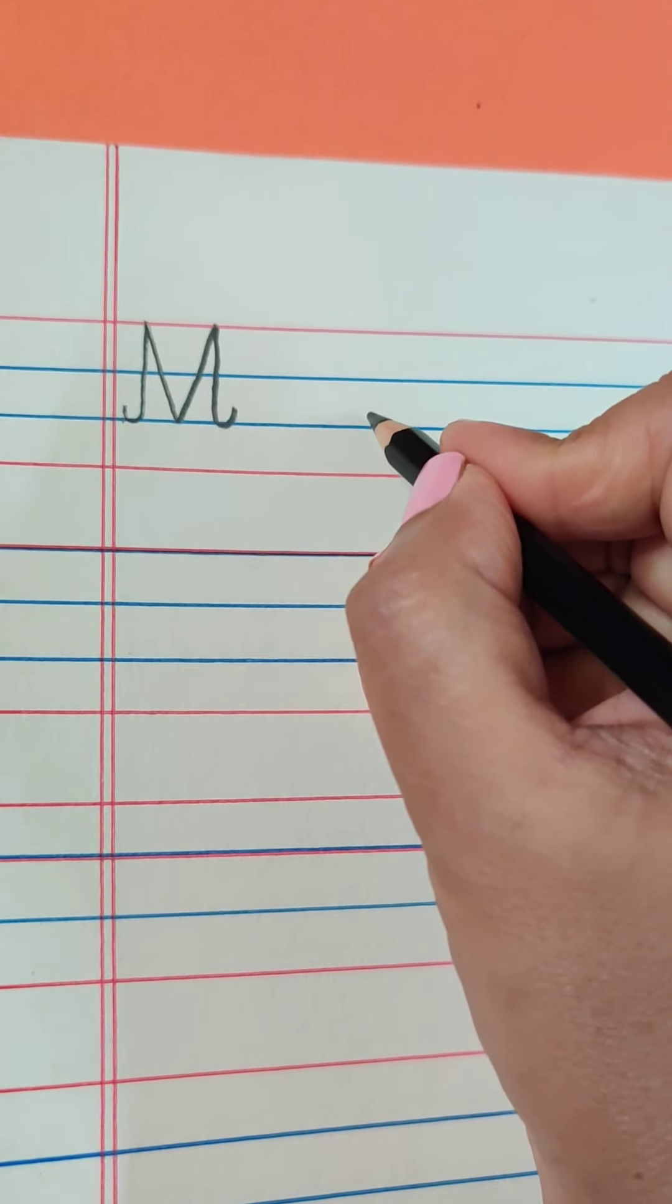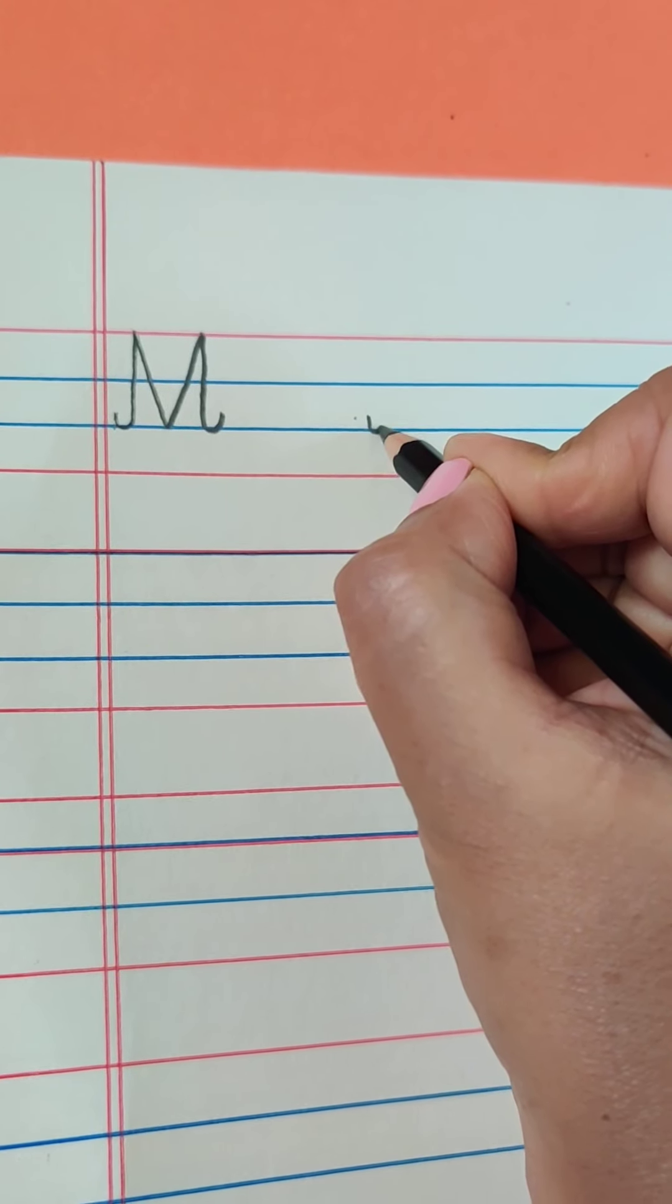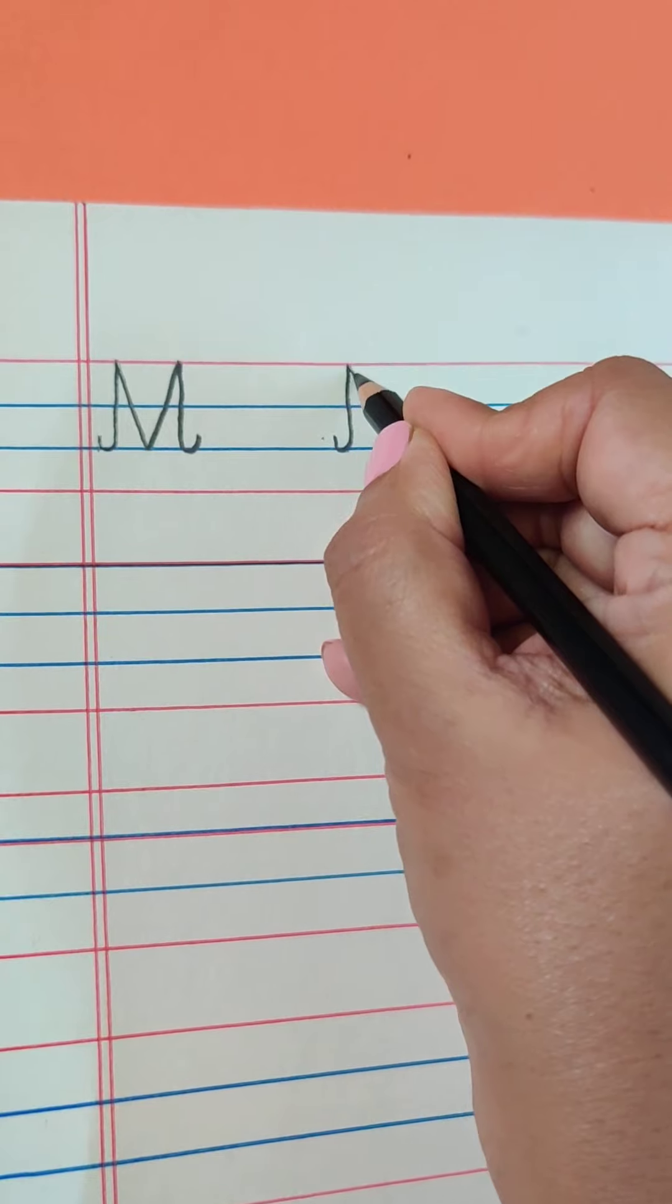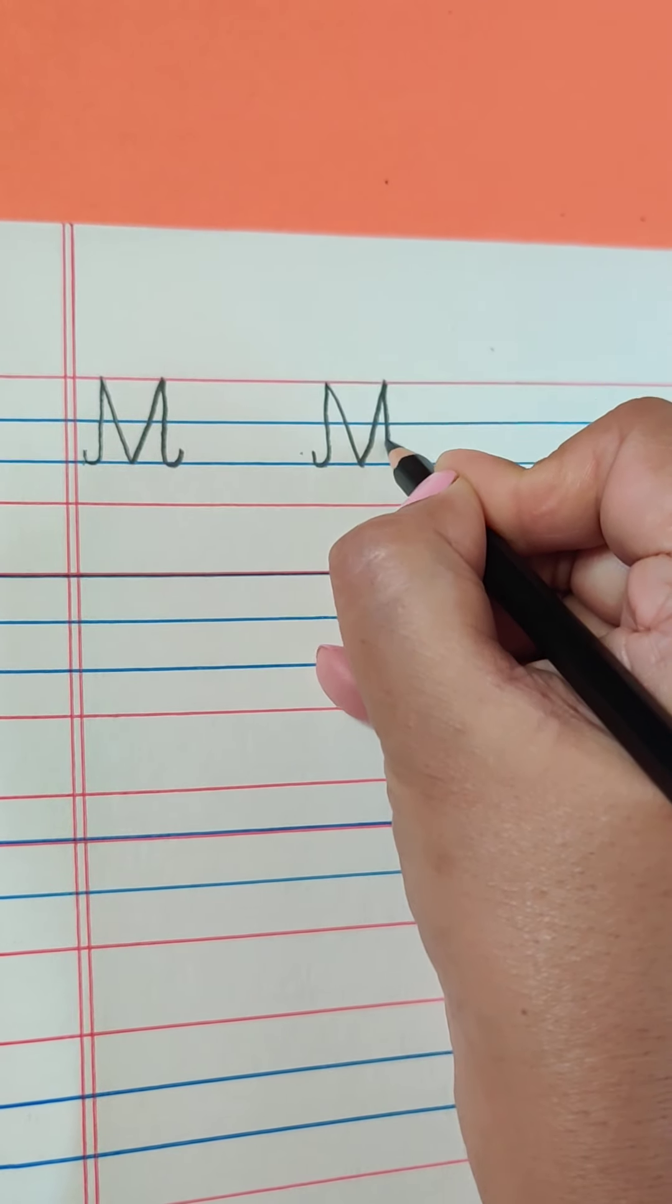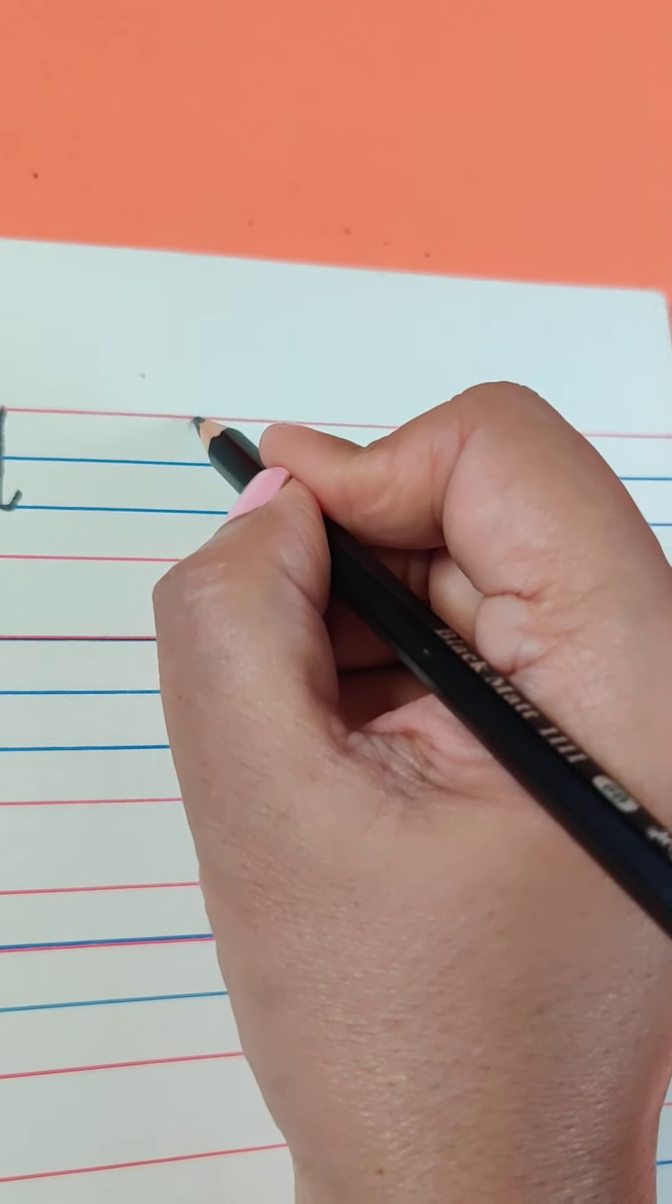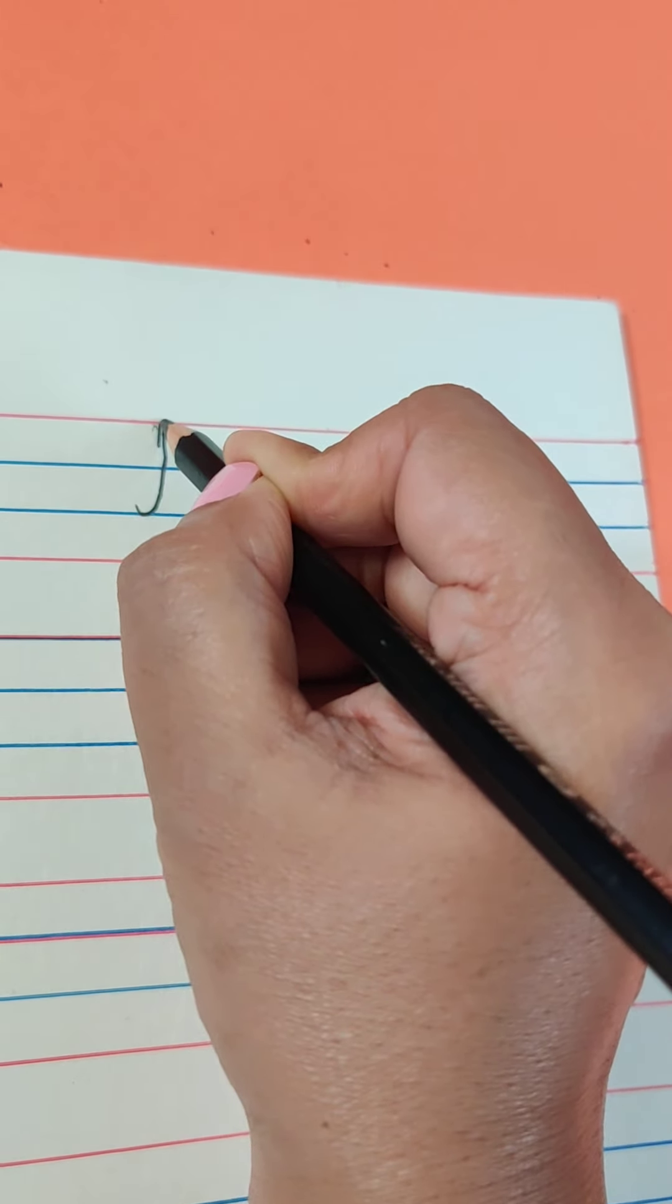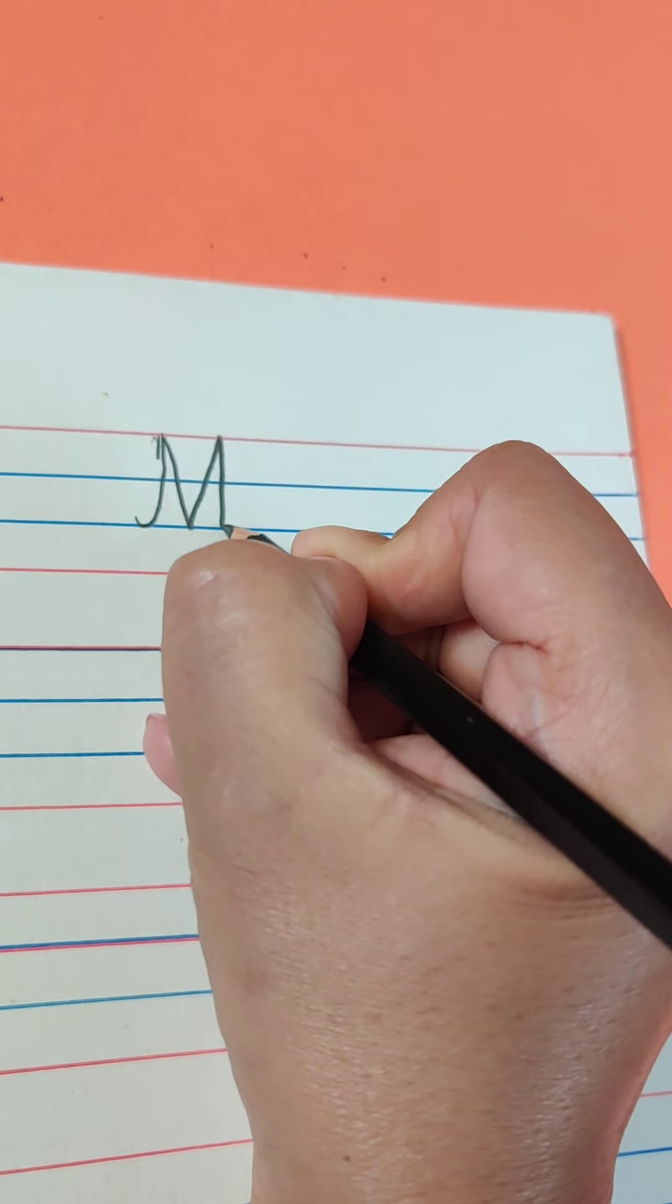Once again, we will start from above the line, curve, go up straight, slant, slant. One more time, oh sorry, go from here, slant, slant, come down straight.